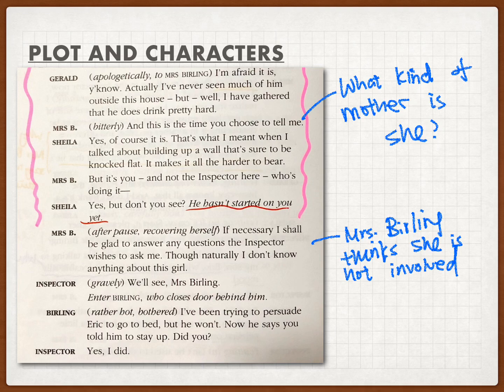Mrs. Birling was upset that an outsider — the inspector — had asked her about her own son and she knew nothing. Sheila reconfirmed to her mother that she would regret not telling the truth, because the inspector would break down all the walls and reveal all the lies. From this conversation, you just need to remember that Mrs. Birling was the kind of mother who didn't really care about her own children.